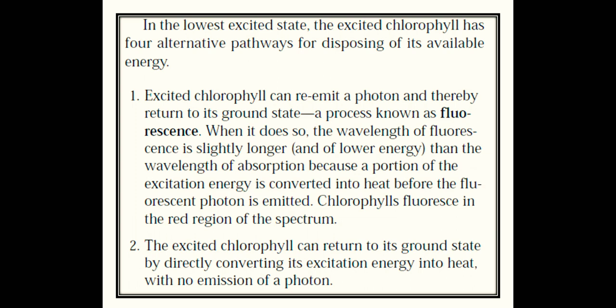The first pathway is that excited chlorophyll can re-emit a photon and thereby return to its ground state. This process is known as fluorescence. When it does so, the wavelength of the fluorescence is slightly longer and of lower energy than the wavelength of absorption, because a portion of the excitation energy is converted into heat before the fluorescent photon is emitted. So chlorophyll fluorescence is in the red region of the spectrum.